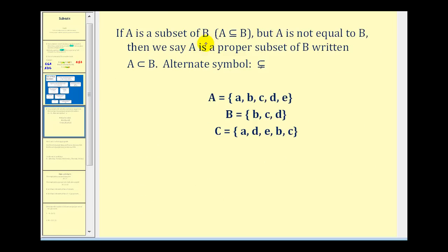If A is a subset of B, but A is not equal to B, we can say that A is a proper subset of B, written using this notation here. Notice that it's the same symbol as the subset symbol except the bar underneath is omitted, or we can include the bar and put a slash through it showing that the two sets are not equal to each other.